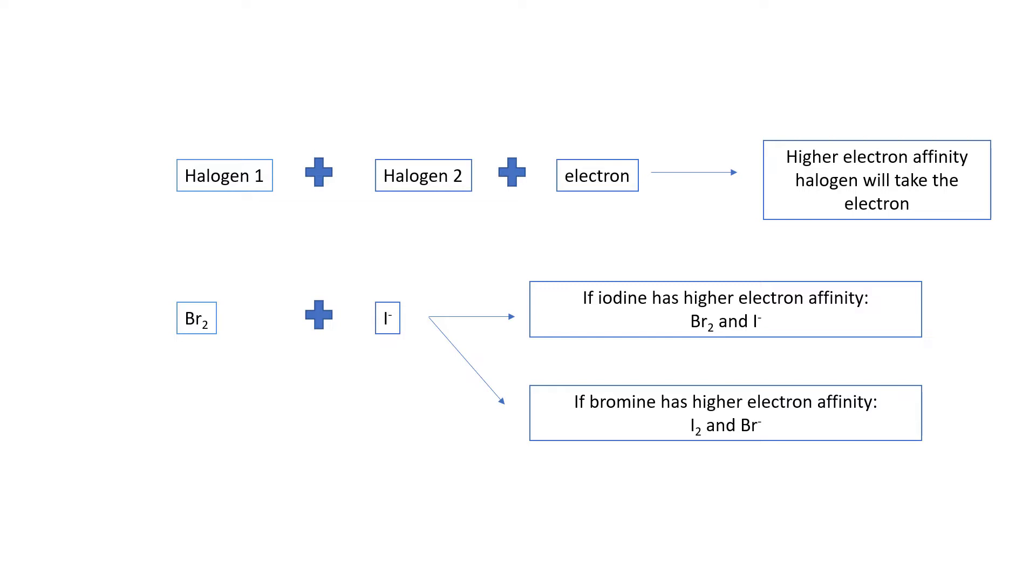So by doing the experiment and looking for which one ends up with the electron, we can see which one had the higher electron affinity.